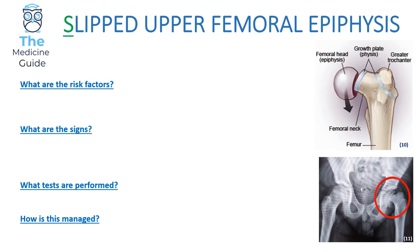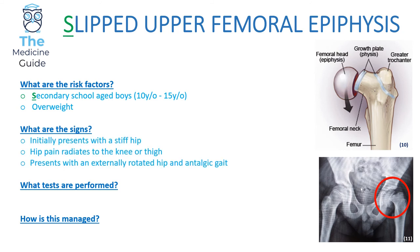Slipped upper femoral epiphysis — I've highlighted the letter S because this condition is commonly found in secondary school children. Think: slipped upper femoral epiphysis begins with an S, found in children of secondary school age; Perthes disease begins with a P, affects children of primary school age. Another risk factor is that it affects overweight children. Initially the child presents with a stiff hip, pain radiating to the thigh or knee, presenting with an externally rotated hip and an antalgic gait.